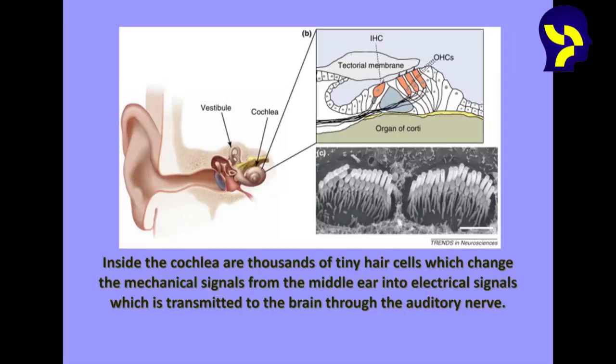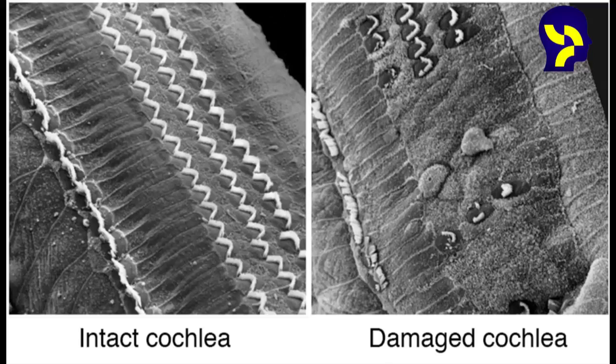Inside the cochlea are thousands of tiny hair cells which change the mechanical signals from the middle ear into electrical signals transmitted to the auditory nerve. Each hair cell has a small patch of stereocilia sticking up out of the top of it. Sound waves make the stereocilia rock back and forth, and if the sound is too loud, these can be bent or broken. This causes the hair cell to die and it cannot transmit sound impulses to the brain anymore. This is a picture of a healthy hair cell versus a damaged hair cell.